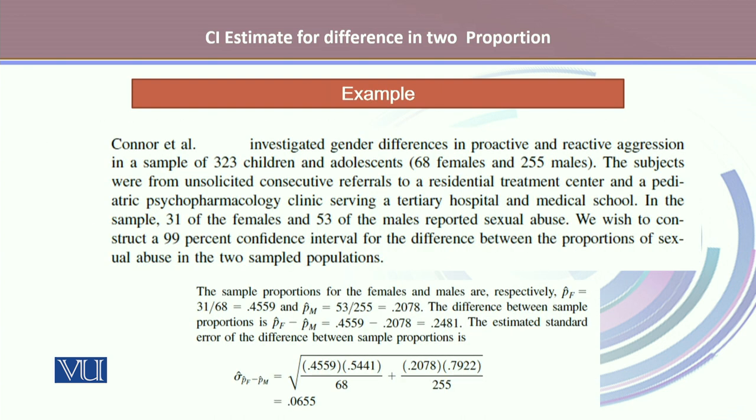Let's take an example. Connor et al investigated gender differences in proactive and reactive aggression in a sample of 323 children and adolescents, 68 females and 255 males. The subjects were from unsolicited consecutive referrals to a residential treatment center and a pediatric psychopharmacology clinic serving a tertiary hospital and medical school. In the sample, 31 of the females and 53 of the males reported sexual abuse. We wish to construct a 99% confidence interval for the difference between the proportions of sexual abuse in the two sample groups.